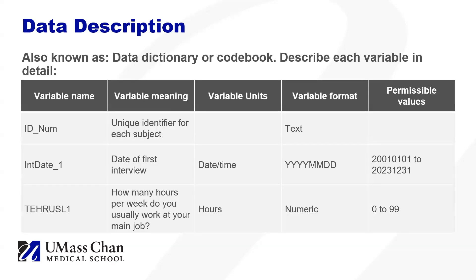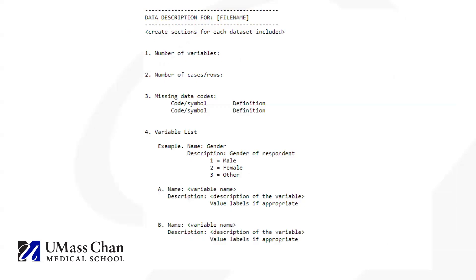Here is a very brief, simple example of what a data dictionary might look like. In this simple example, you can see three variables, their descriptions, applicable units, formats, and permissible values. For more complex datasets made of multiple data files, you should also indicate which data files the variables belong to. Here you see the third section of the generic template, the data description section. You should describe the data for each file in your dataset. If this information is stored elsewhere, list here where that data description can be found.